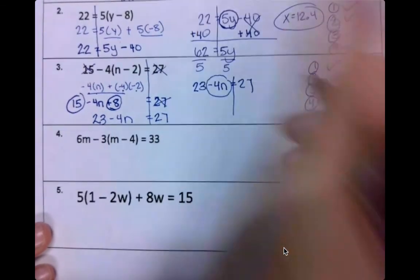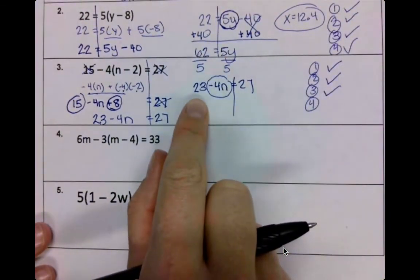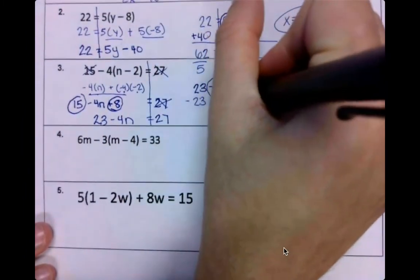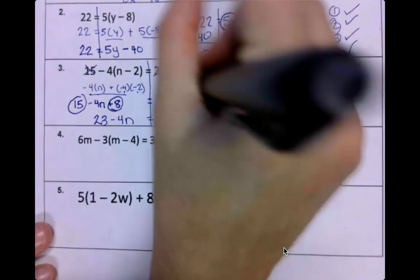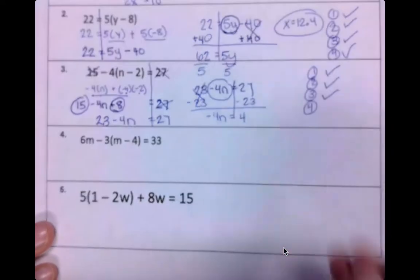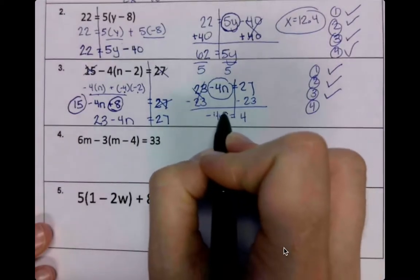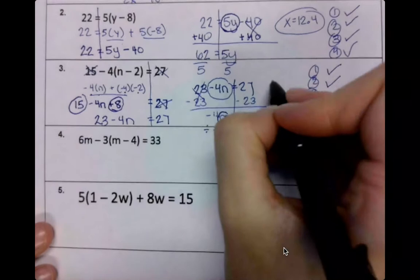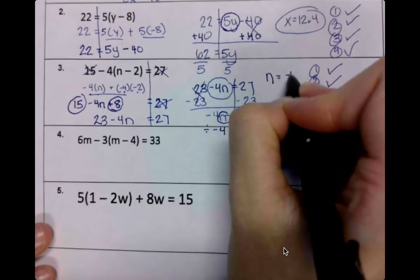This is what I want to get alone. What's standing in my way? The 23. How do I move it? Subtract. How do I get the n alone? Divide by -4. So n equals -1.